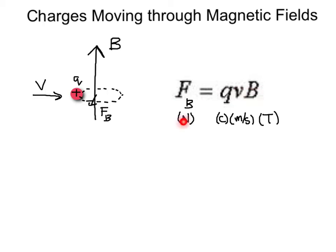Notice the units of force are still newtons, charge is measured in coulombs, velocity in meters per second, and our units of magnetic field are Tesla, or capital T.